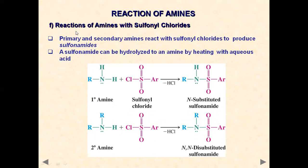Amines can also react with sulfonyl chloride in an addition reaction. When amines react with sulfonyl chloride, HCl is removed and we get an N-substituted sulfonamide. Using a secondary amine with sulfonyl chloride gives an N,N-disubstituted sulfonamide. By varying the amine, we can obtain different substituted sulfonamides.